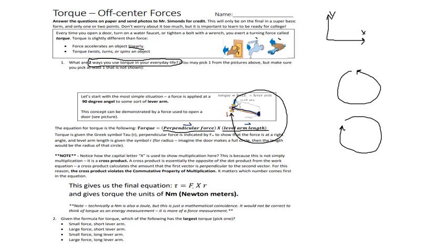This uses something called the cross product, which is the opposite of the dot product. The dot product from work figures out how similar two vectors are — how much are they going in the same direction. The cross product for torque is the opposite: it figures out how much these two vectors are in different directions — how much is one in the x compared to how much is the other in the y.